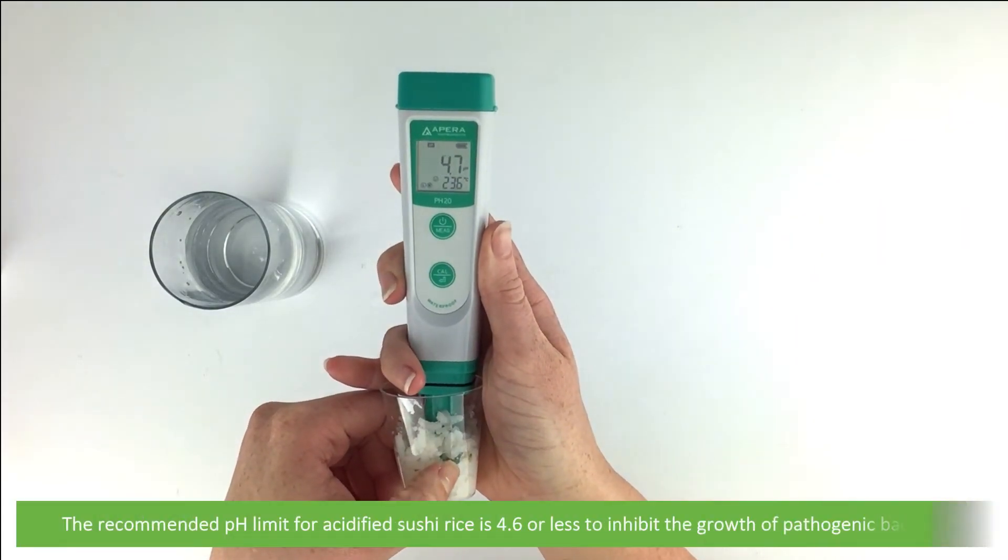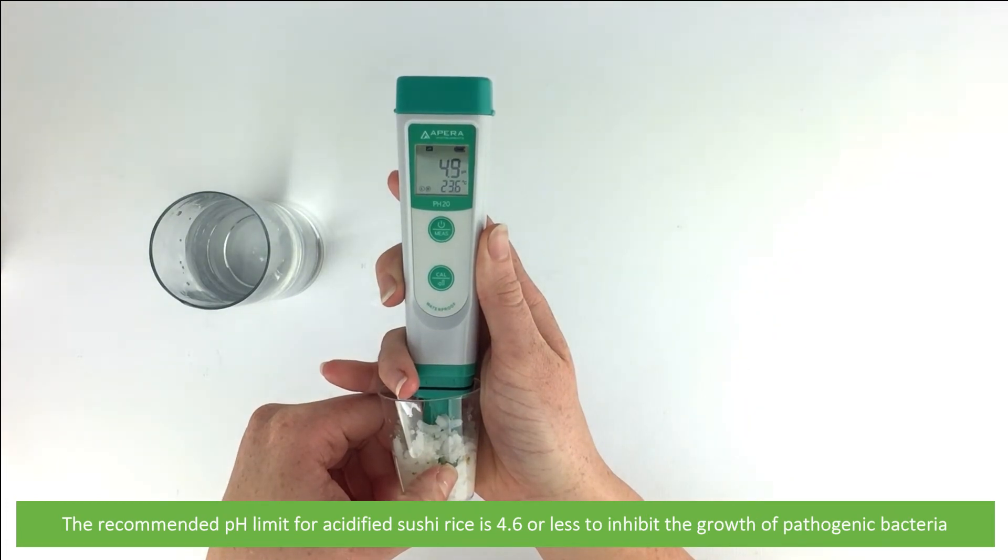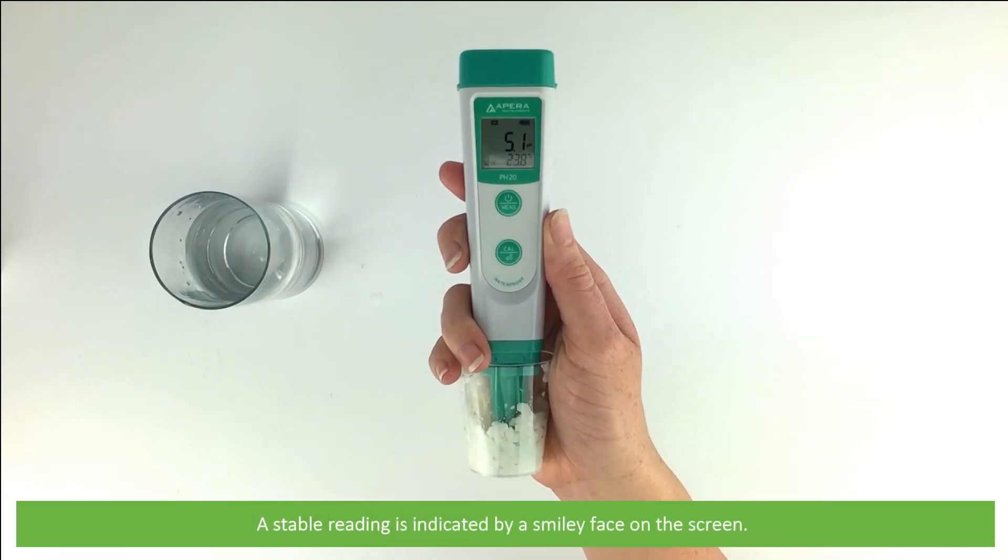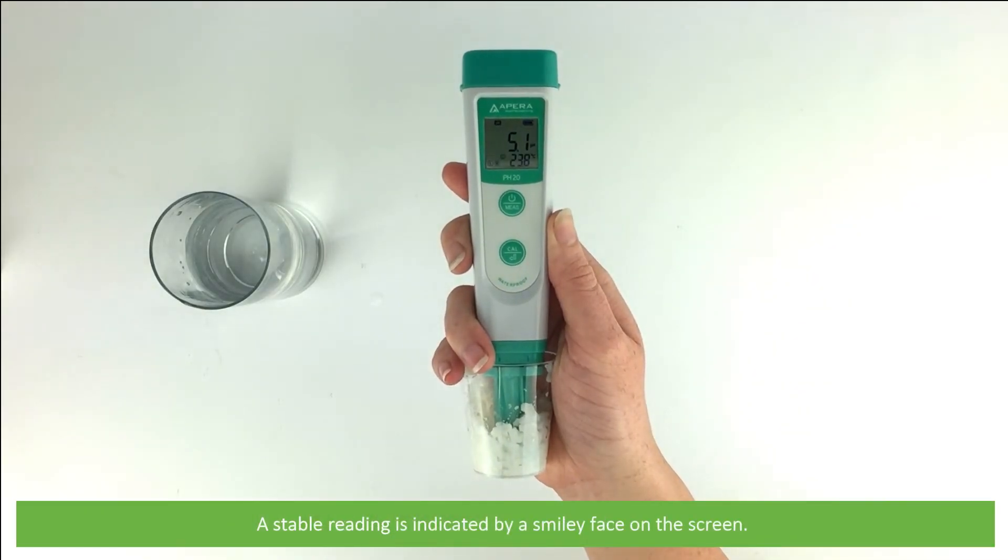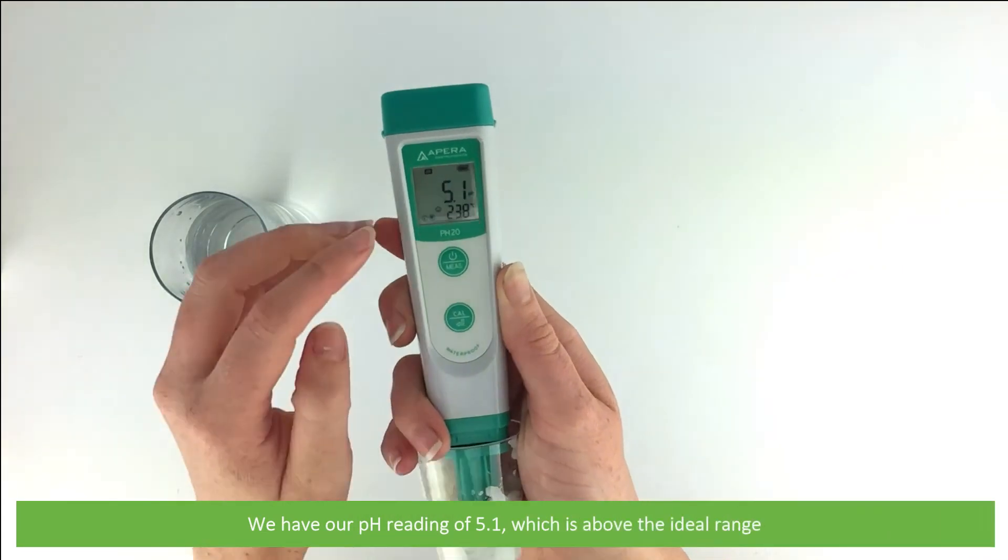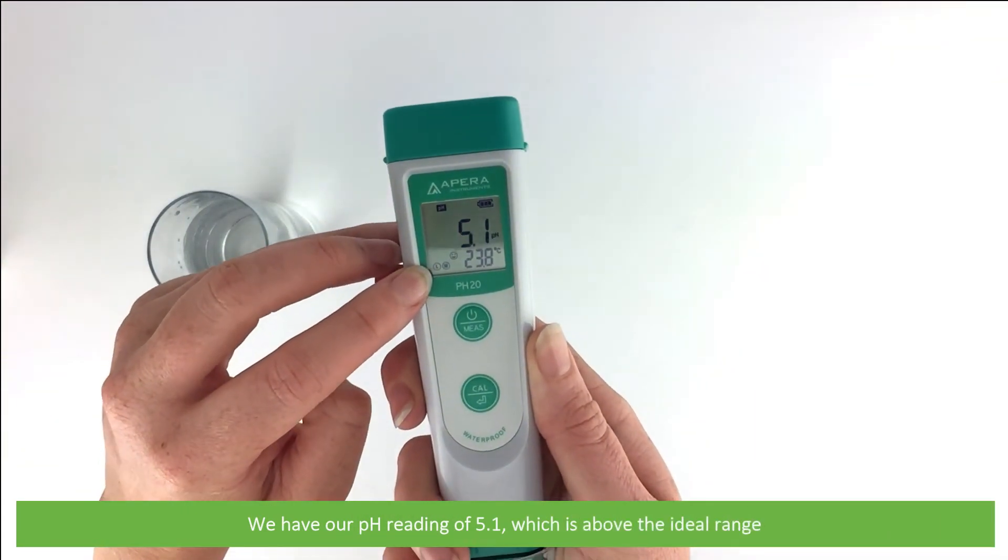The recommended pH limit of acidified sushi rice is 4.6 or less. This is to inhibit the growth of pathogenic bacteria. A stable reading is indicated by a smiley face on the screen. We have our pH reading of 5.1, which is a little bit above the ideal range.